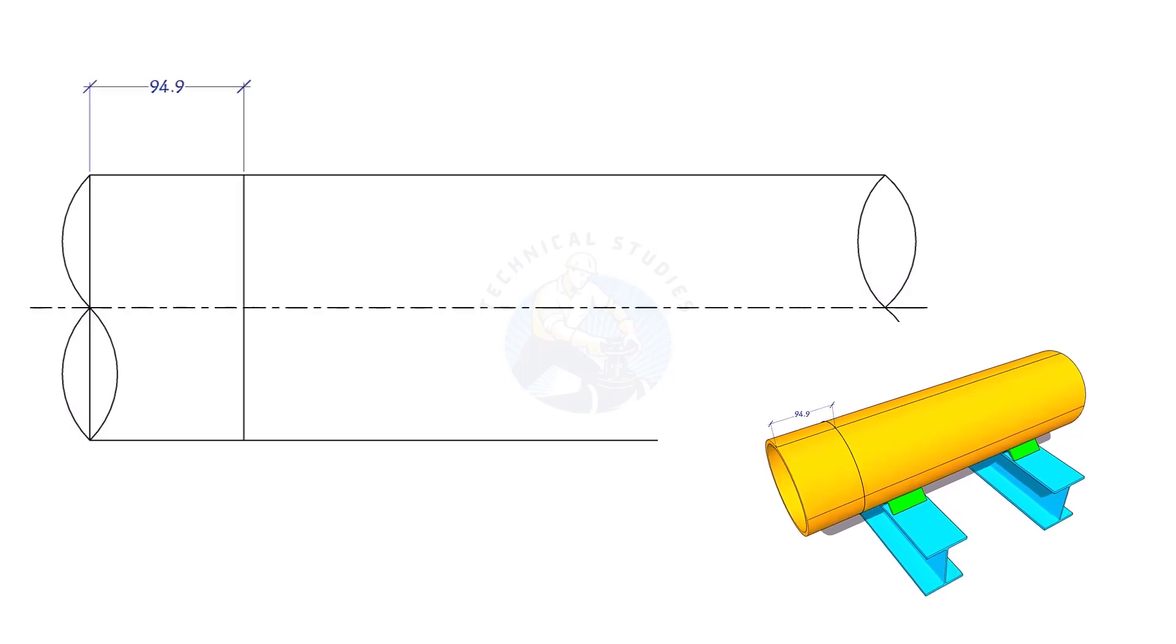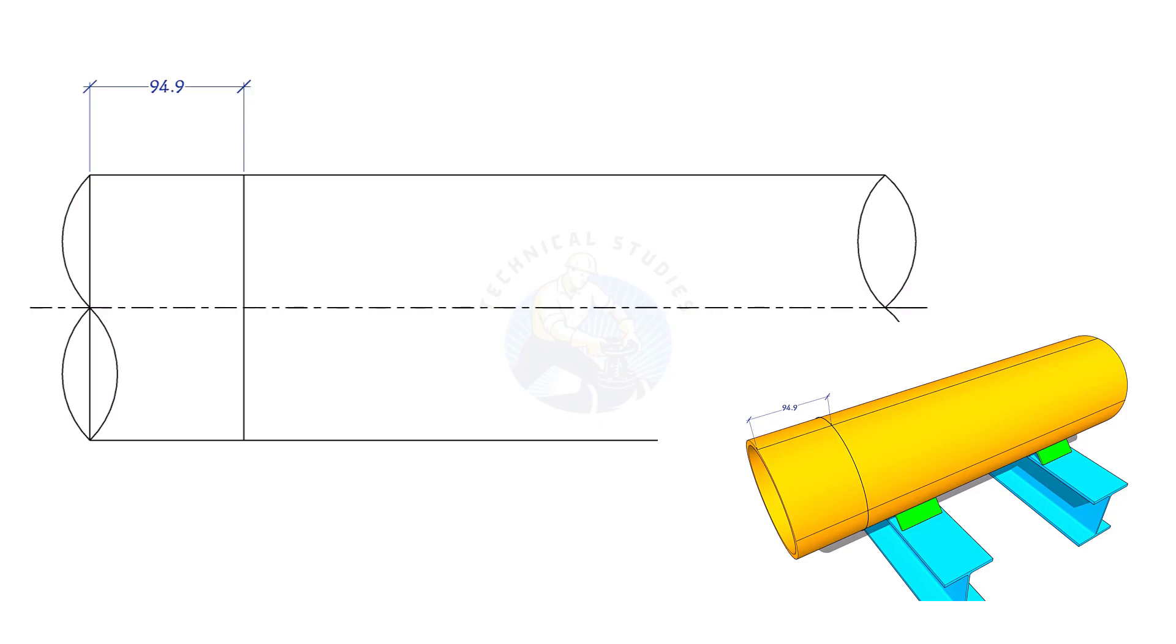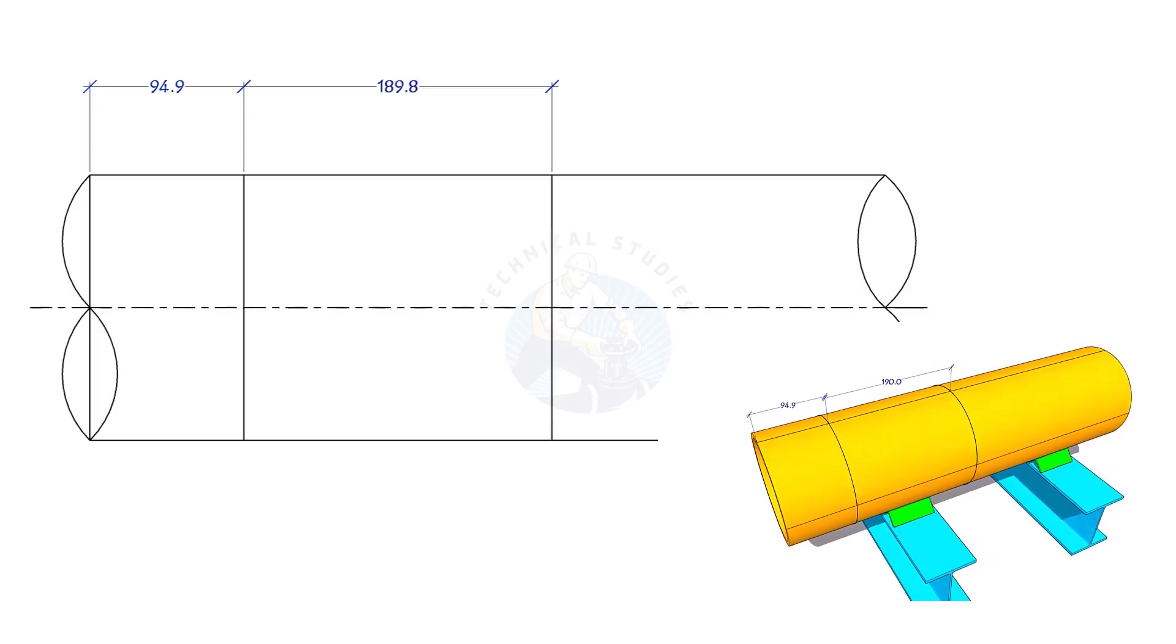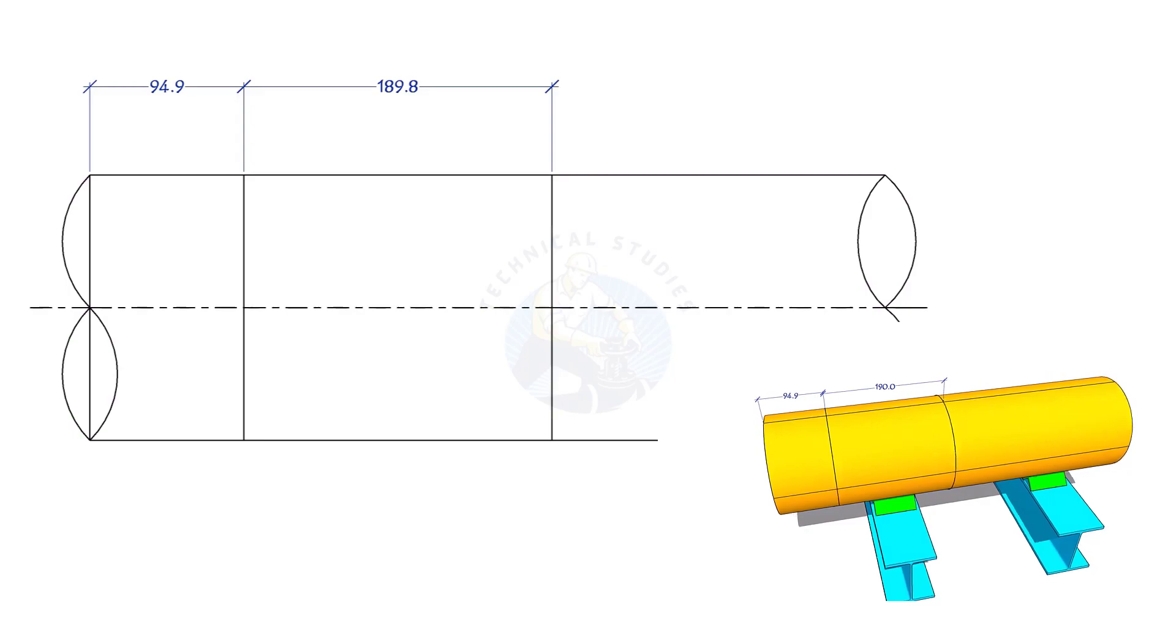Draw four equally spaced lines on the pipe. Mark the end part length, then the middle part and the other end part length as shown.